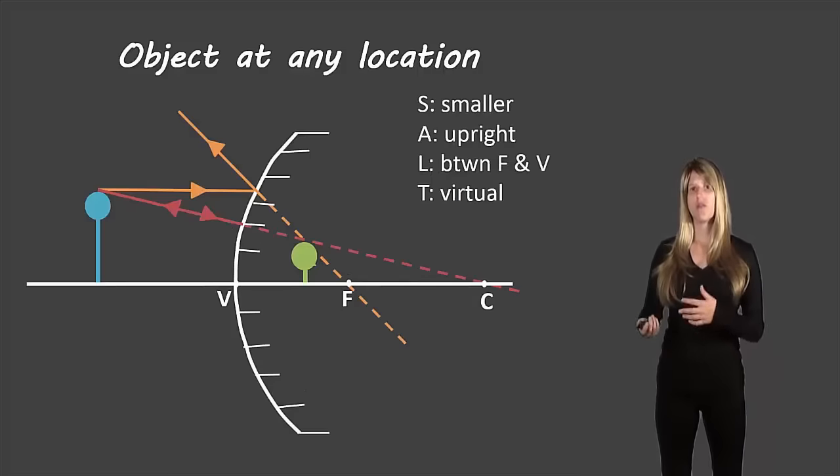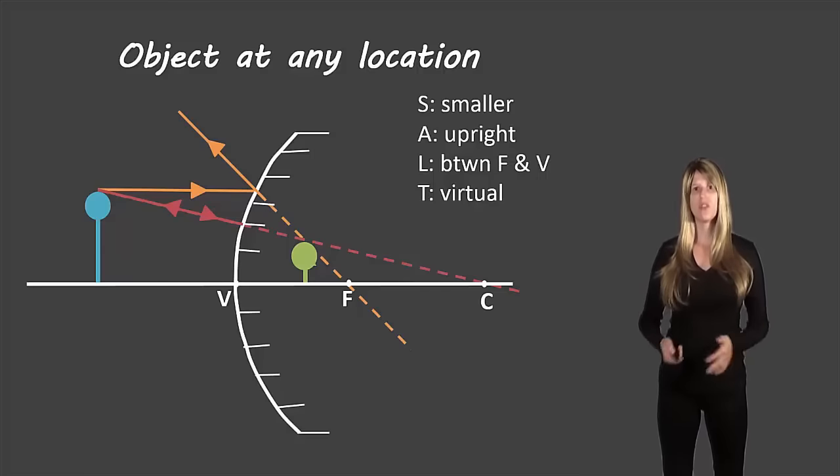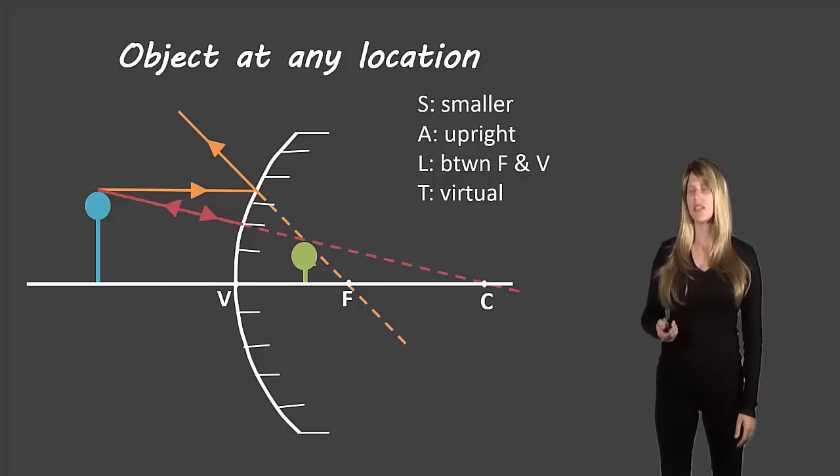And this will always be true for every single type of image you do in a convex mirror. So convex mirrors have the same rules and have the same description every time.